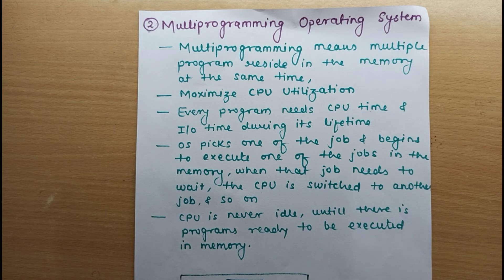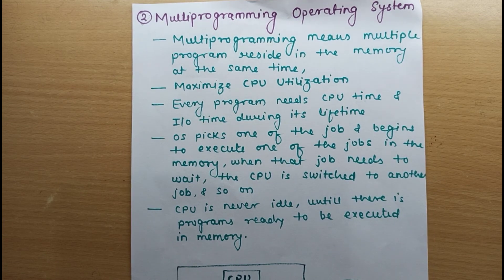The CPU switches to another job only when the program executing on it goes for an IO operation. The CPU is never idle as long as there is a program ready to be executed in memory. If there is no job in memory, then the CPU will be idle. But if there is at least one job, the CPU will never be idle — it will execute each job one by one.